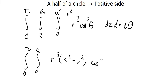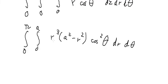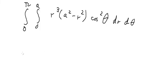Cosine square theta dθ. This one multiplies here and multiplies here, and we get R to the power of 3 A squared minus R to the power of 5.